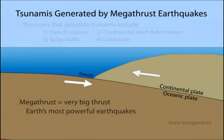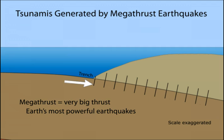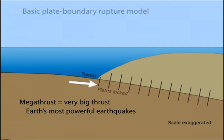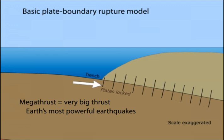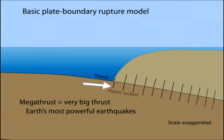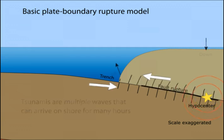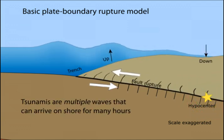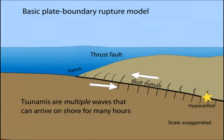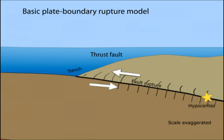Subduction zone megathrust earthquakes, the most powerful earthquakes, can produce tsunamis through a variety of structures that are missed by simple models. The basic model shows rock above the convergent plate boundary being compressed and bent as it stores elastic energy. Once friction is overcome, the overriding plate slides abruptly up the fault, causing the leading edge to heave seawater upward, generating a tsunami. This shallow angle reverse fault is called a thrust fault because the overlying plate thrusts up over the subducting plate.